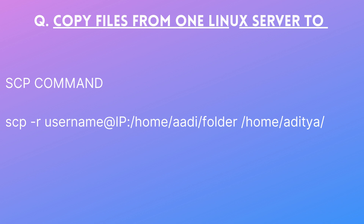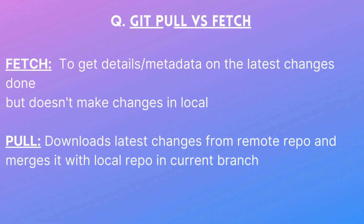Git pull versus fetch is a commonly asked question. With `git fetch`, it retrieves details and metadata about the repository — information about files and their status — but it does not make any changes to your local repository. With `git pull`, it fetches all changes from the remote repository and updates your local repository so it is completely in sync with the remote.